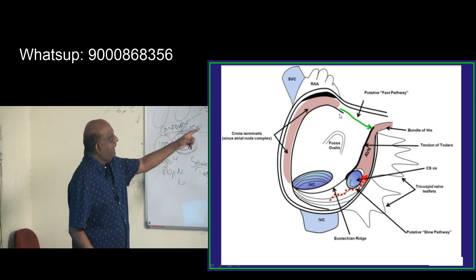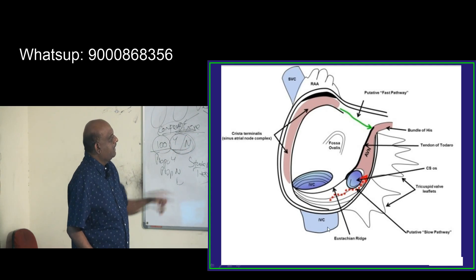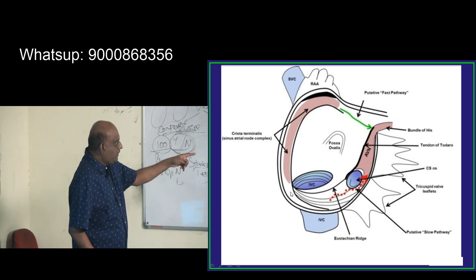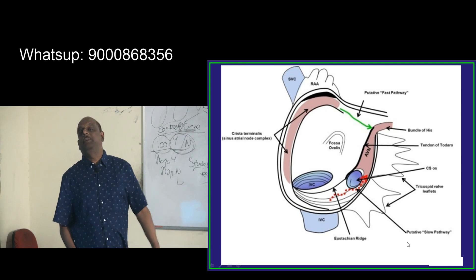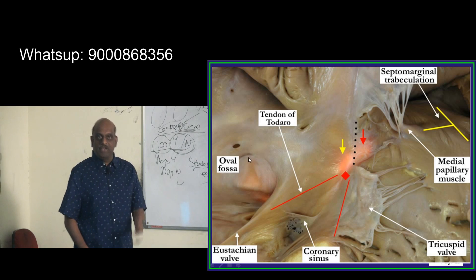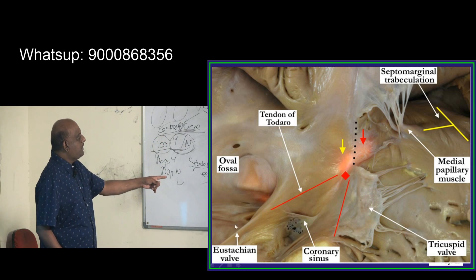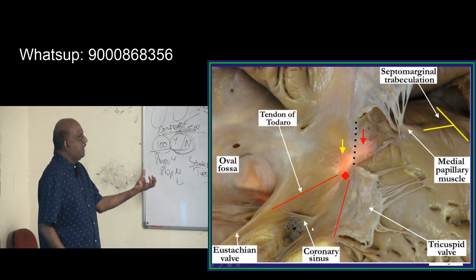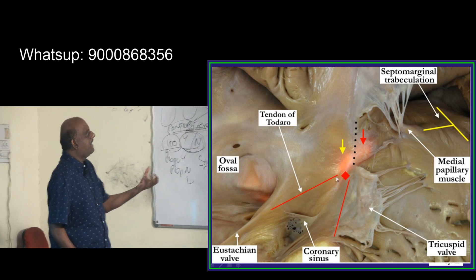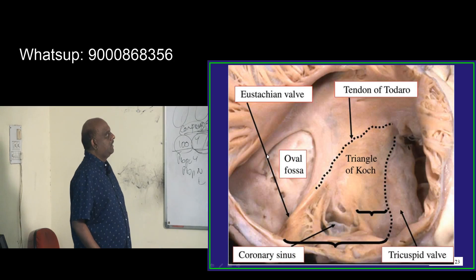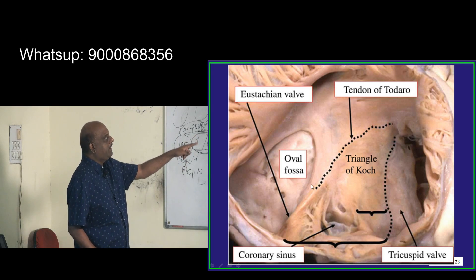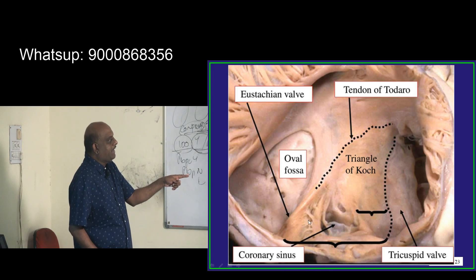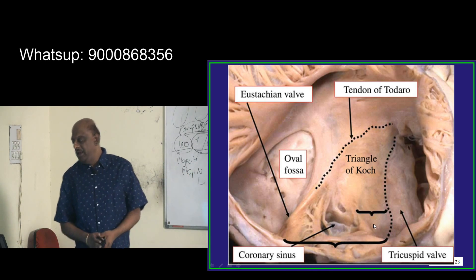Looking again at the anatomy: here you have the crista terminalis, the Eustachian ridge, the inferior vena cava, and the coronary sinus. The Tendon of Todaro passes over this region. The Eustachian valve is at the opening of the inferior vena cava, and the coronary sinus is nearby — this is the location of the Tendon of Todaro.